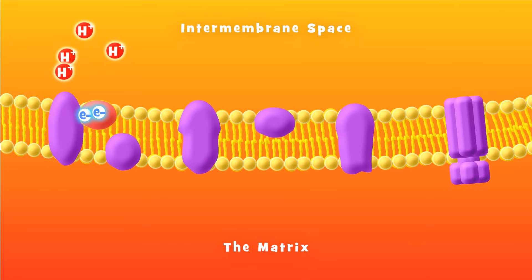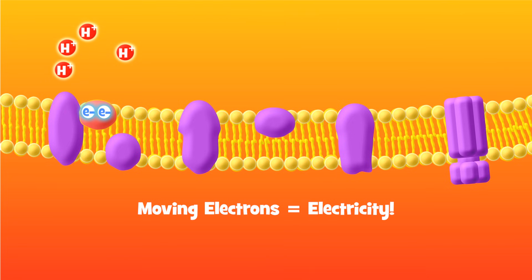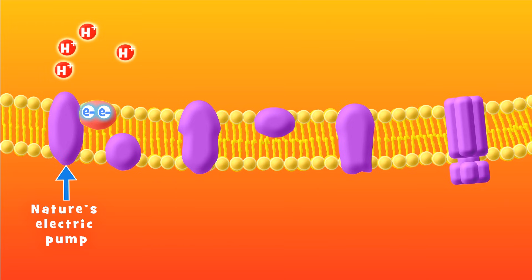At this point, it might help to realize that moving electrons is electricity, so it should not be surprising that these electrons can provide the energy to drive these microscopic pumps made out of protein. They are basically natural electric pumps, created way before humans invented them, which is super cool.